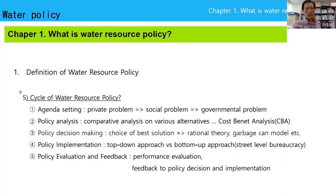There are five steps or cycles of water resource policy: agenda setting, policy analysis, policy decision making, policy implementation, and policy evaluation and feedback. We call these the five stages of public policy, and we will deal with all five steps.